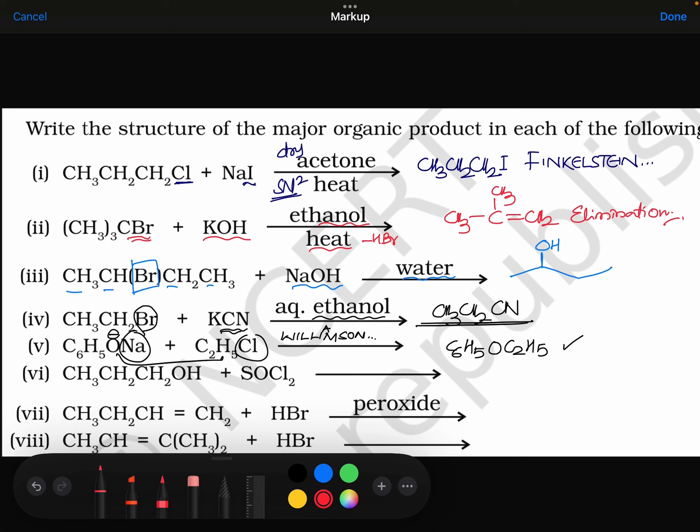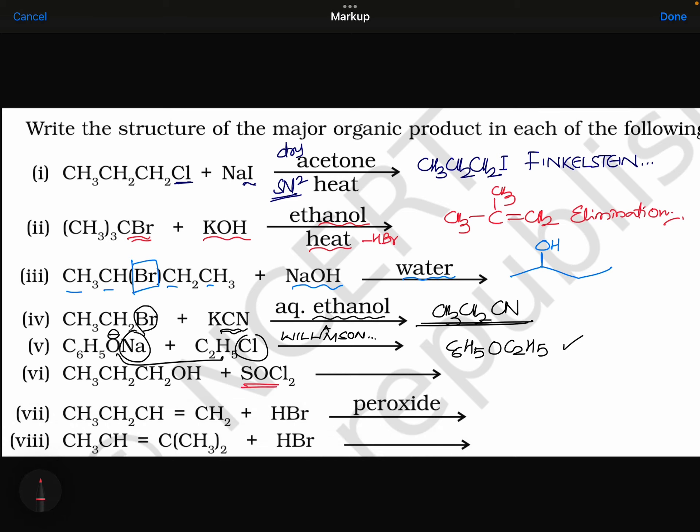Coming to the next. SOCl2. Very good chlorinating agent. OH is out. CH3, CH2, CH2, chlorine. Plus SO2, plus HCl. This reaction is also called Dorsen's reaction. You can use here even pyridine also.